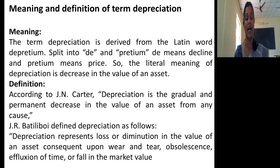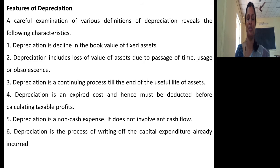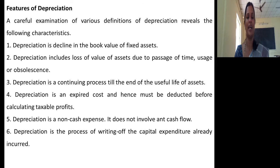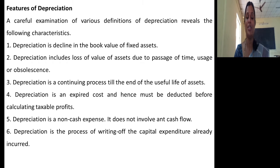Decrease in the value of asset arises out of four important reasons: wear and tear, obsolescence, affliction of time, and fall in market value — that is nothing but depreciation. Looking at these two important definitions, it is very clear that depreciation indicates decline in the book value of a fixed asset. Depreciation includes loss of value due to passage of time, usage and obsolescence, and is a continuing process till the end of the useful lifetime of an asset.